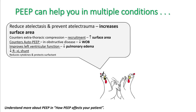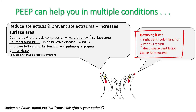PEEP works by reducing atelectasis and preventing atelectrauma. It increases surface area by recruitment, can counter auto-PEEP, decrease work of breathing, improve left ventricle function, decrease pulmonary edema, and decrease right-to-left shunt. However, it can also decrease right ventricle function, decrease venous return, and increase dead space ventilation, apart from causing barotrauma.